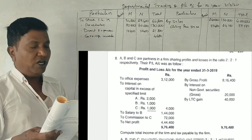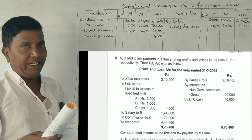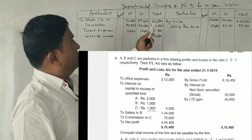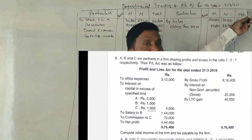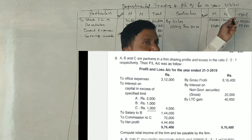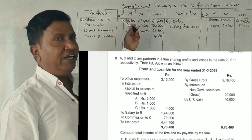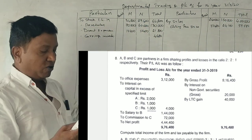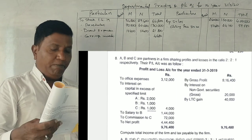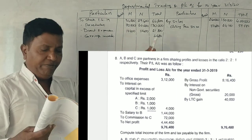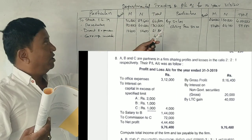Opening stock on 1st April 2019 — that is the opening year. Then we have purchases, sales, and carriage inwards. So opening stock, purchases, and sales — all over to you.